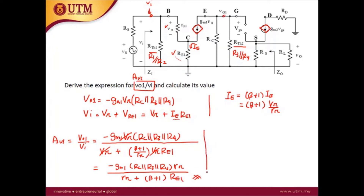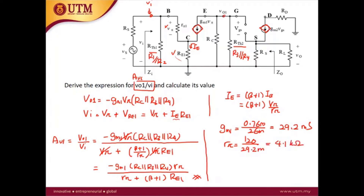To calculate Av1 numerically, we need Gm1. Gm1 = IC / 26mV = 0.76m / 26m = 29.2 milli-Siemens. Rpi = Beta / Gm = 120 / 29.2m = 4.1 kilo-ohm. Inserting all values into the equation gives Av1 = minus 35.21.